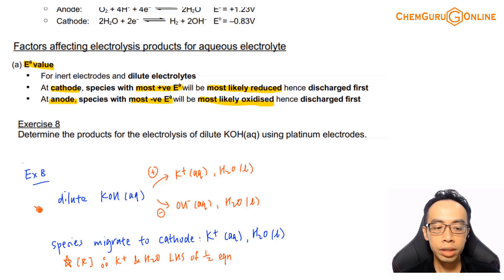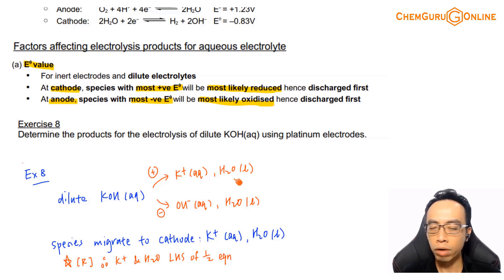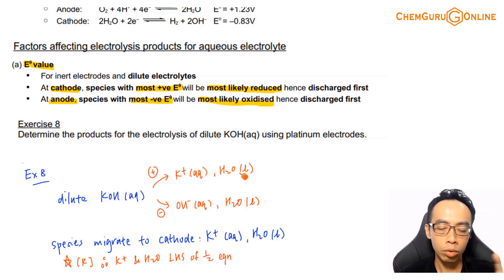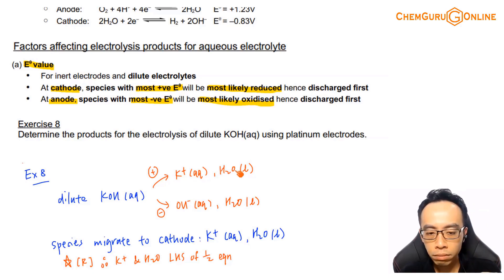For exercise 8, I've split into cation and anion. The cation is K+, and we have to consider water. Again, consider water — don't consider H+ from water. We don't use H+ because the E value for H+ and the E value for water is different.